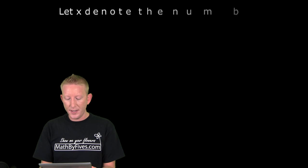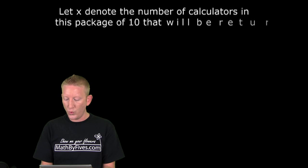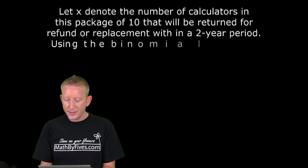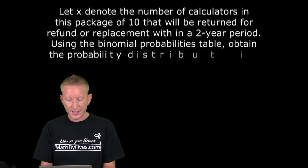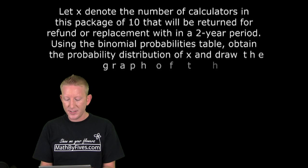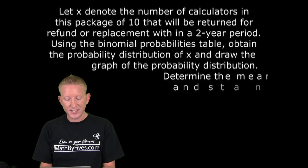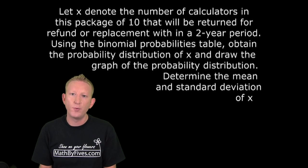Part A! Let X denote the number of calculators in this package of 10 that will be returned for refund or replacement within a two year period. Using the binomial probabilities table, obtain the probability distribution of X and draw the graph of this probability distribution. Determine its mean and standard deviation. Let's go to the board for that one.